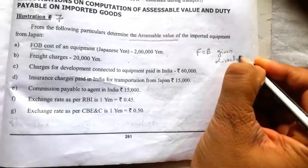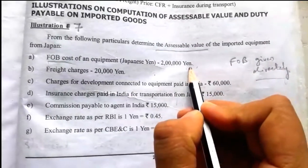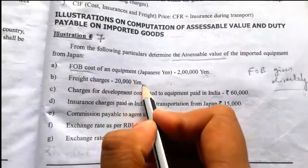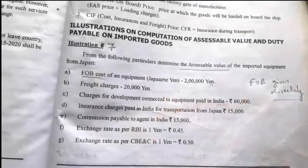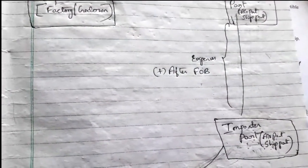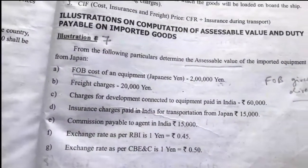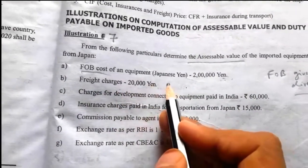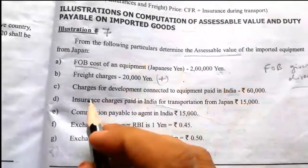When FOB is given directly, the FOB value of 2,00,000 Yen must be converted using the exchange rate, and then freight charges of 20,000 Yen — which represents freight from the exporter port to the importer port — must be added after FOB.